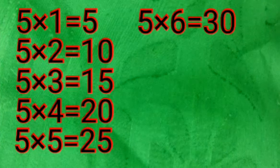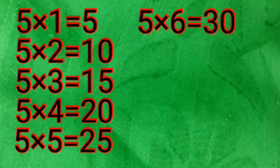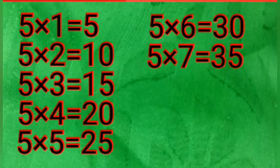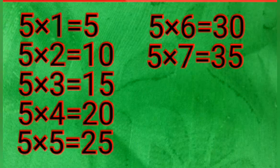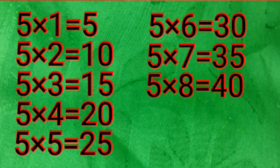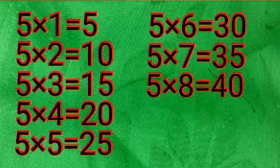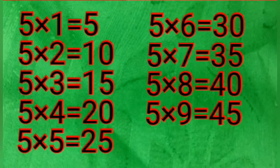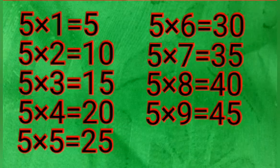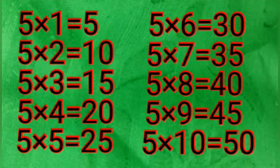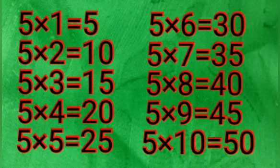Five sixes are 30. Five sevens are 35. Five eights are 40. Five nines are 45. Five tens are 50.